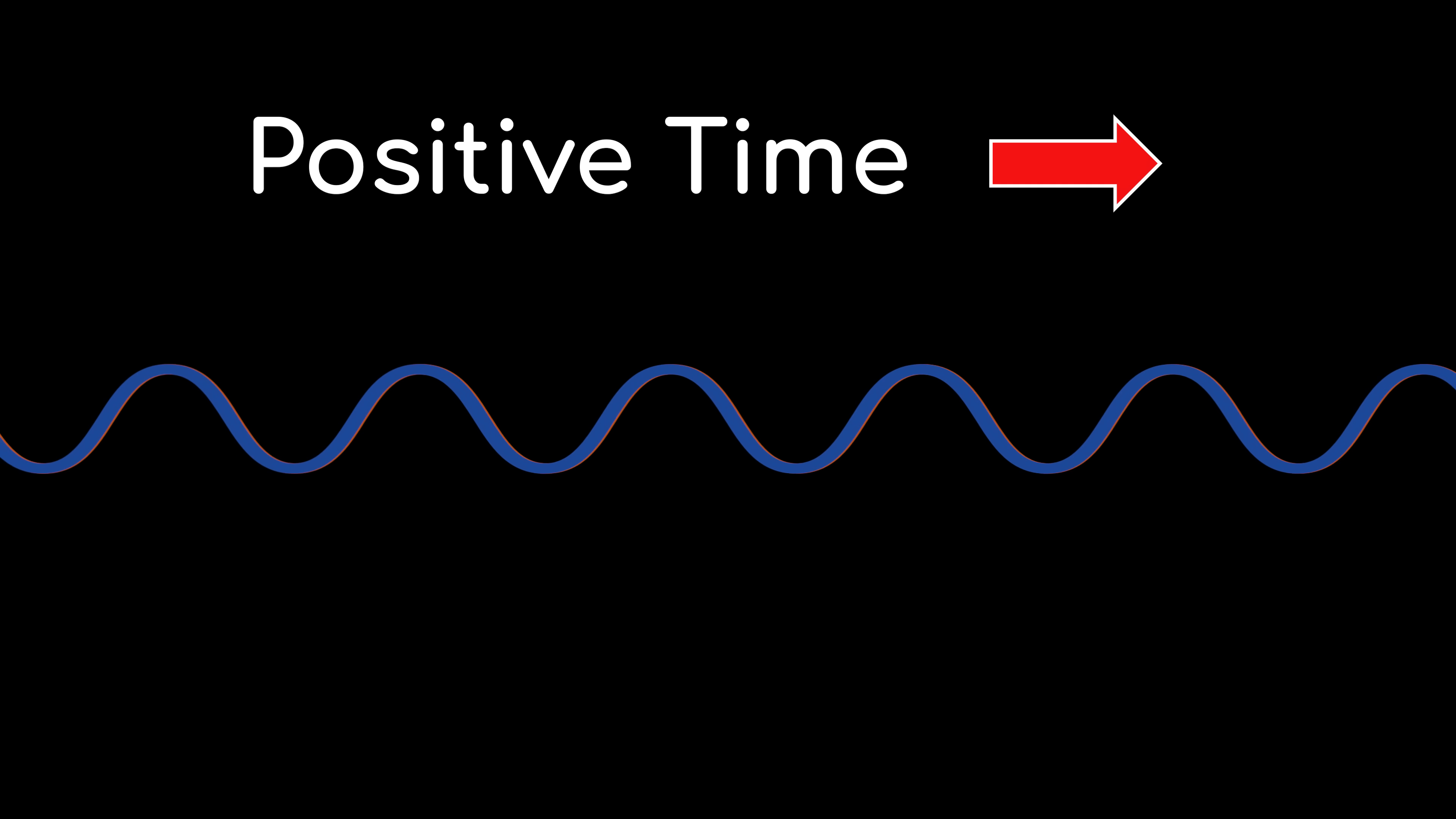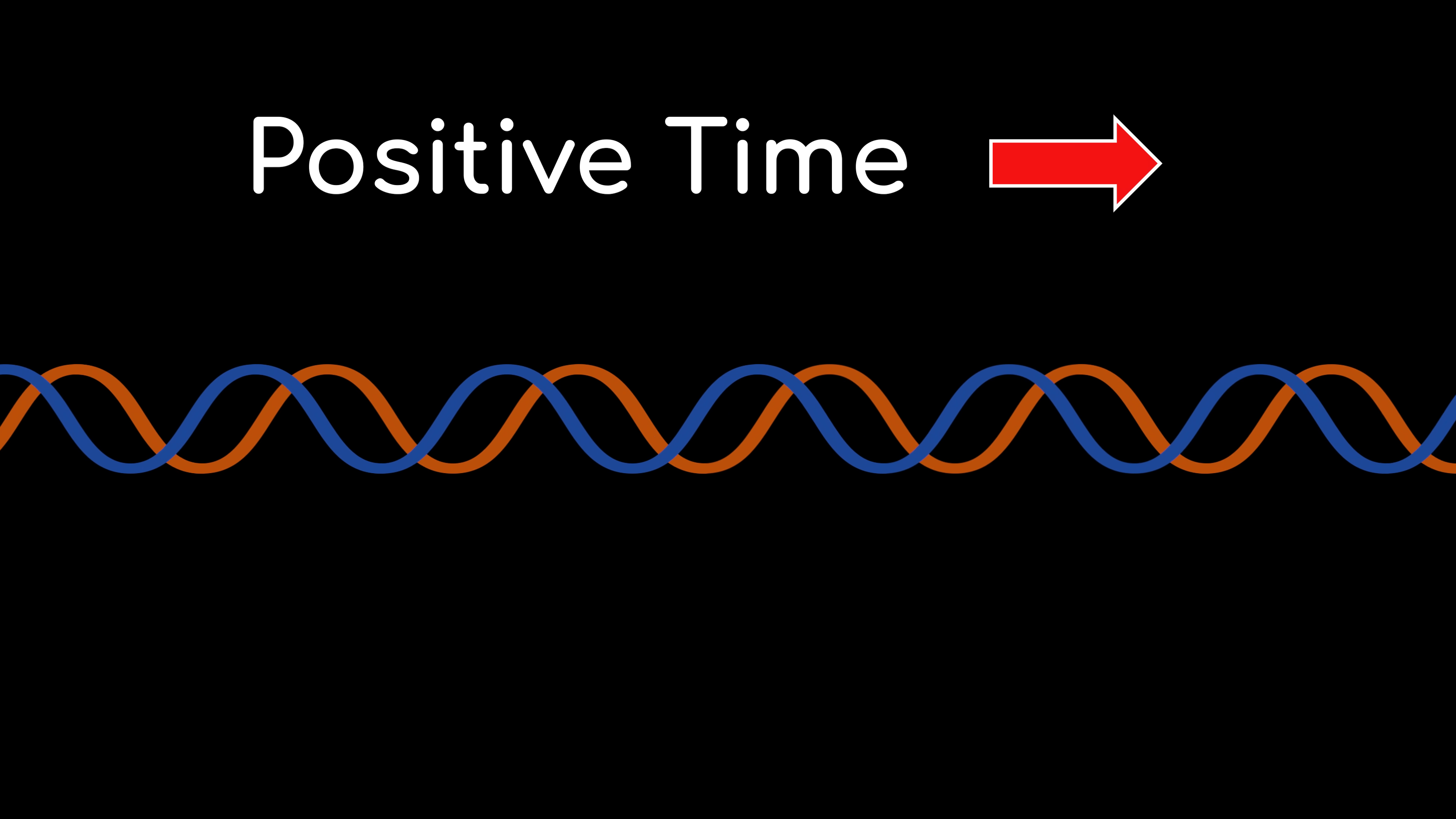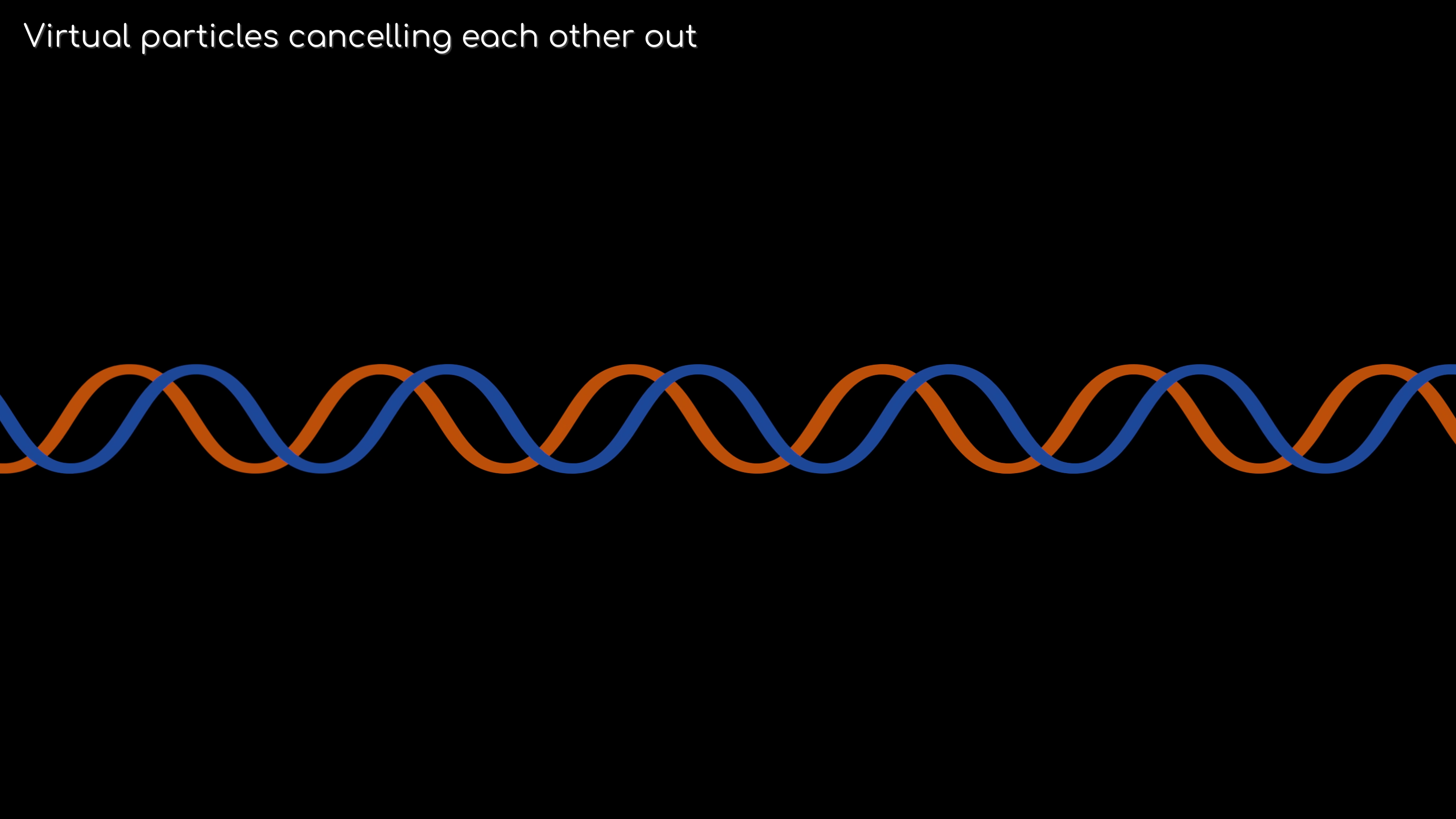As a side note, there is a theory that antimatter is simply matter that is moving in the opposite direction through time, but that's a level of weirdness that we don't need to get into here. The important part is that the quantum fields are constantly resonating and constantly cancelling each other out. This is why, for the most part, empty space is empty.